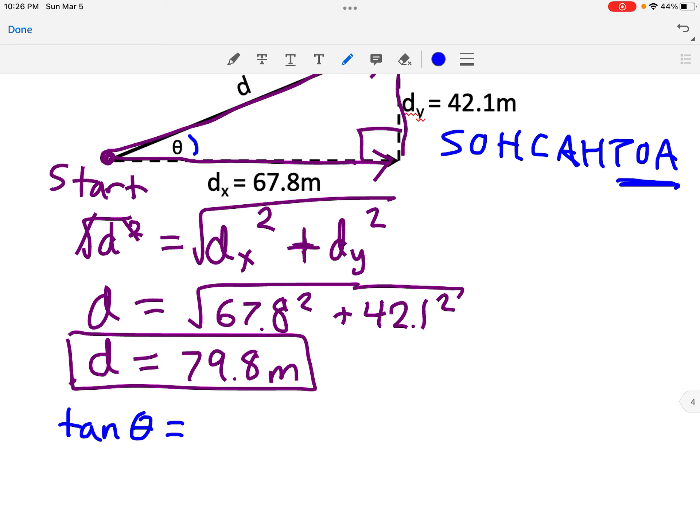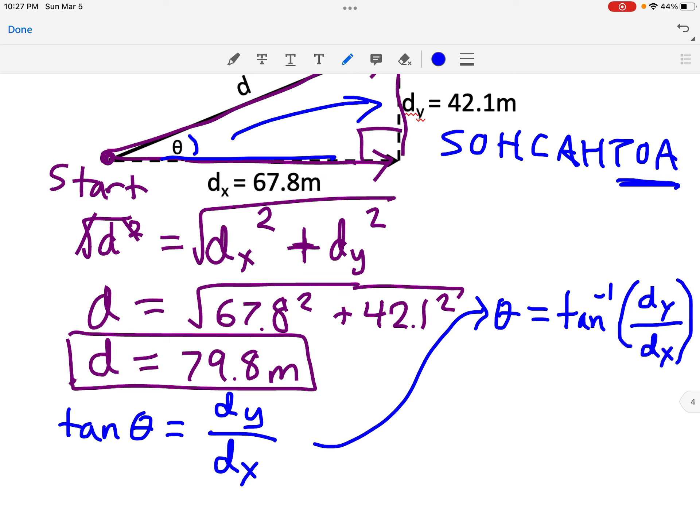So the Toa part tells me that tan of my angle theta is going to equal the opposite. The opposite side is dy, right? That's the side that's far away from the angle theta, divided by the adjacent. Adjacent side would be dx, right? That's the one close to your angle. Getting theta alone, I'll just do it over here. To undo a tan function, right, get theta out of it, you want to use the inverse tan. So it'll be tan to the minus 1 of that dy divided by dx, the opposite side divided by the adjacent side. So we're ready now to plug in our numbers. Theta is going to be inverse tan, tan to the minus 1, of 42.1 divided by 67.8. So you're doing your calculator 42.1 divided by 67.8 and then hit inverse tan of that. And I get 31.8 degrees. So that is my angle.